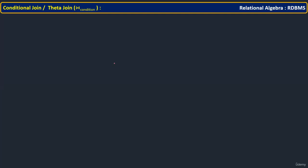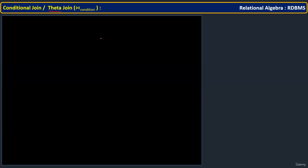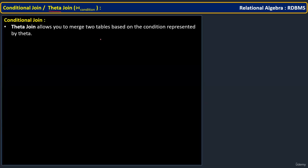Let us start with the first join — the conditional join, also called a theta join. Theta join allows you to match two tables based on a condition. Here you can see the conditional join symbol, and in this position we write the condition, which is represented by theta. In this way you can write: join with theta, where theta is the condition.